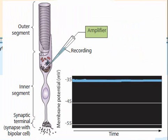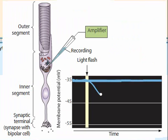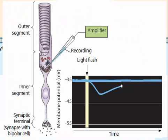In the dark, when the cell is depolarized, it continually trickles out neurotransmitter from its synaptic terminals. A brief light stimulus triggers the membrane to get more negative, that is, to hyperpolarize. As the membrane hyperpolarizes, the cell releases less neurotransmitter onto the next neurons in the visual pathway.